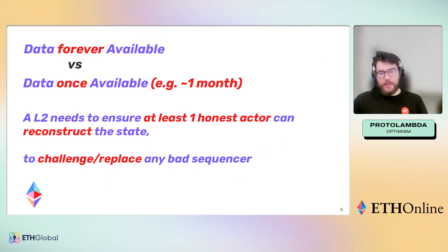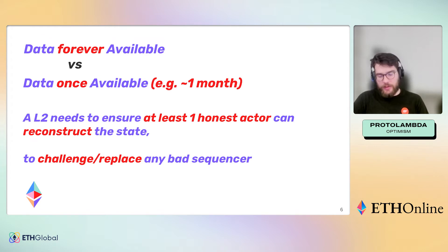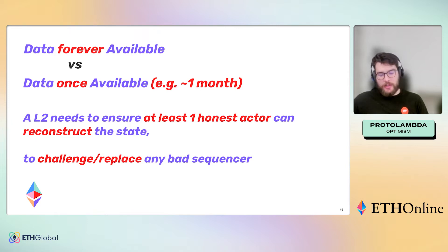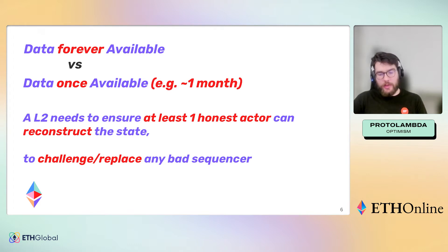With layer two we only really need this data availability for other honest actors in the network to reconstruct the state. Reconstructing the state is very easy if the state was only ever changing slowly and everybody agreed on it, but the challenge is that layer two is quickly changing - new transactions are being confirmed every second. All this data that's changing needs to be made available in a permissionless way where we do not rely on the sequencer. This is what layer one offers: hosting data that's changing and that cannot be relied on from just one actor - it should be available to everybody.